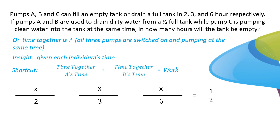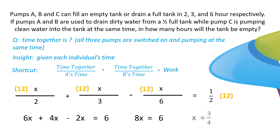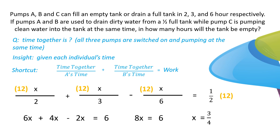X goes in the numerator, and the denominators are the individual times: two, three, and six. Pumps A and B are getting the job done, so we add those fractions. Pump C is going the other direction, so we subtract C's fraction. We multiply through by the common denominator, 12, do a little algebra, and find that x equals three-fourths. This is a very tricky question made very easy with our shortcut.